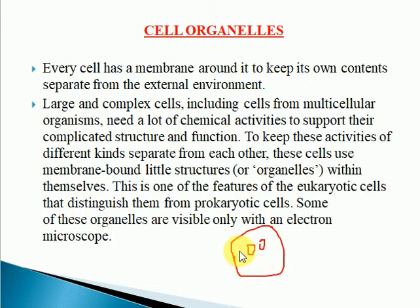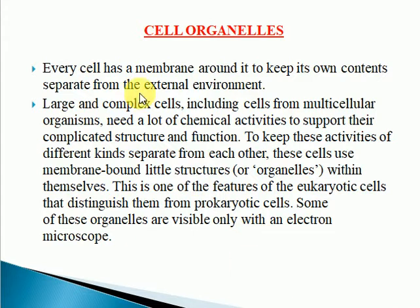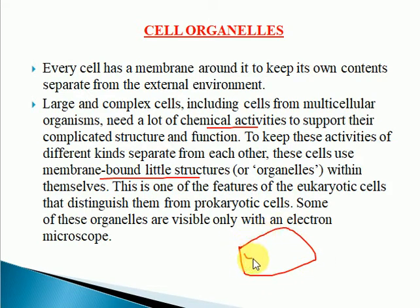For example, the nucleus controls all the activities of the cell, and the mitochondria helps in the production of energy. Different cell organelles in a cell have different functions. Large and complex cells need a lot of chemical activities to support their complicated structure. To keep these activities separate from each other, the cells use membrane-bound little structures — the cell organelles. This particular feature is present in eukaryotic cells, but in case of prokaryotic cells, well-defined organelles are not even present.